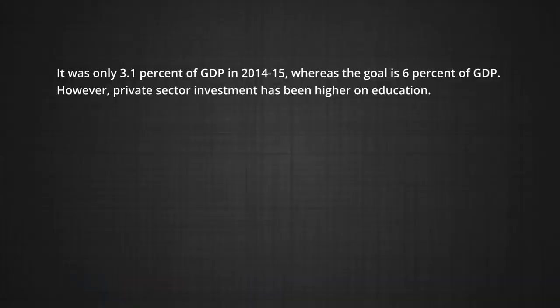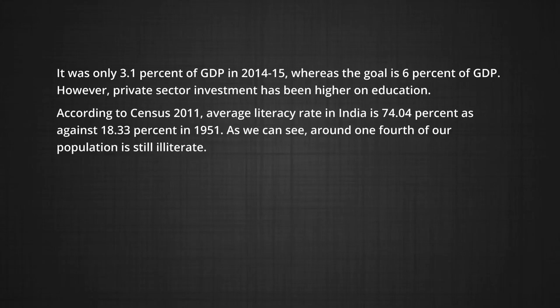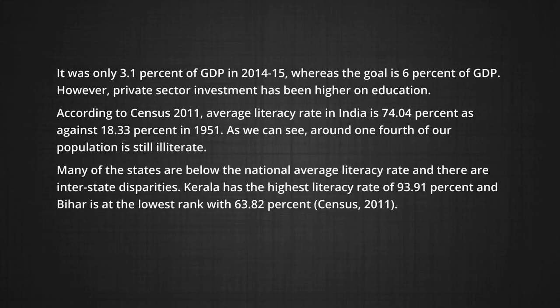Still, public expenditure in India is inadequate — it was only 3.1 percent of GDP in 2014-15, whereas the goal is 6 percent of GDP. However, private sector investment has been higher on education. According to Census 2011, the average literacy rate in India is 74.04 percent, as against 18.33 percent in 1951. Around one-fourth of the population is still illiterate. Many states are below the national average literacy rate. Kerala has the highest literacy rate of 93.91 percent and Bihar the lowest at 63.82 percent.